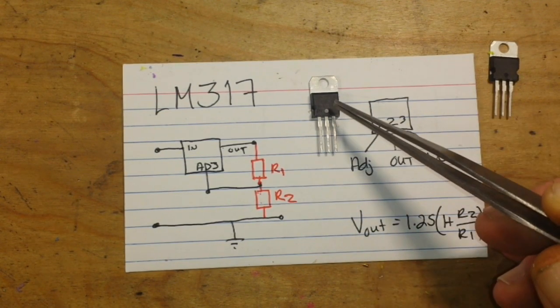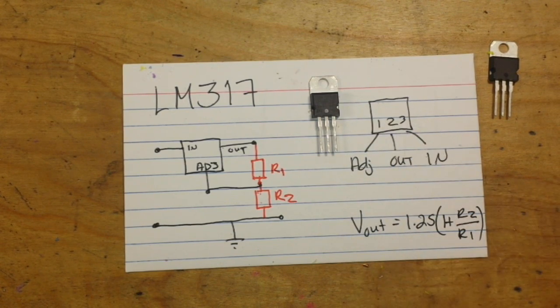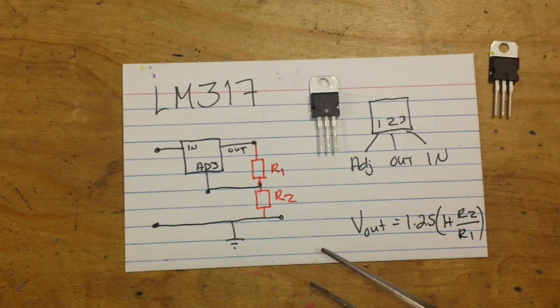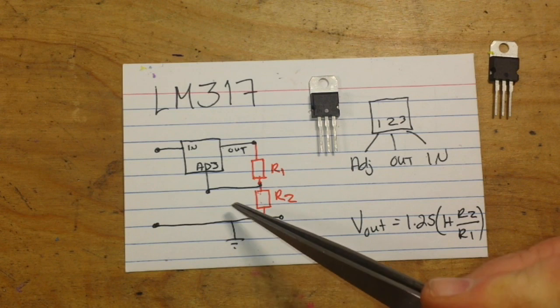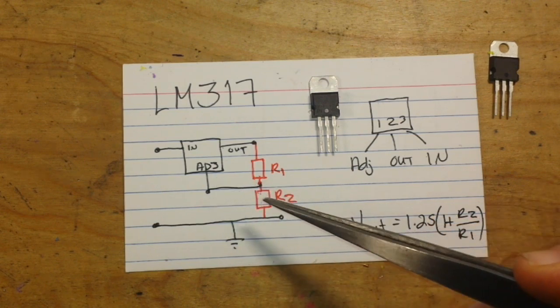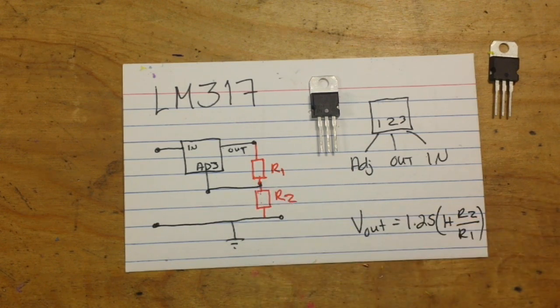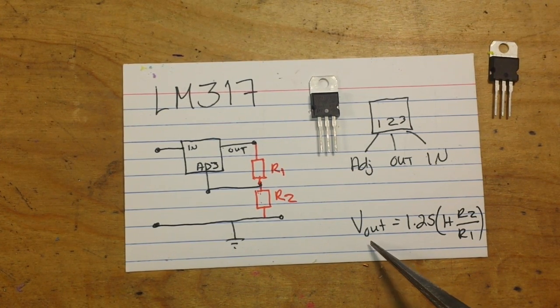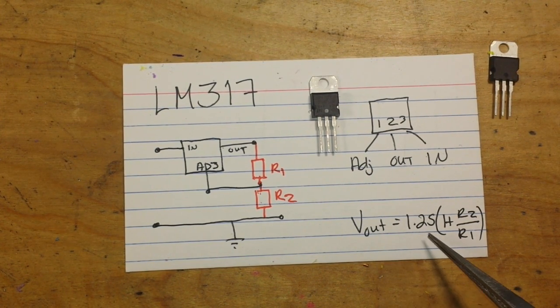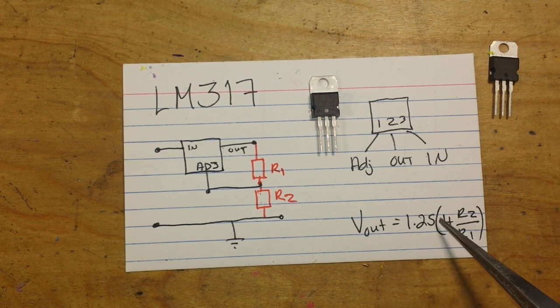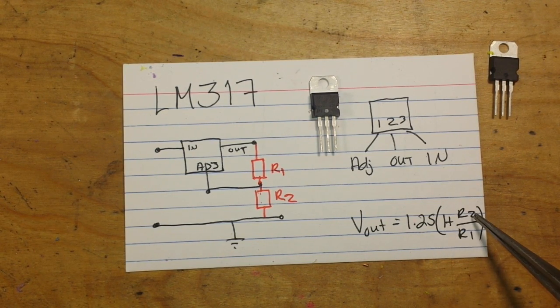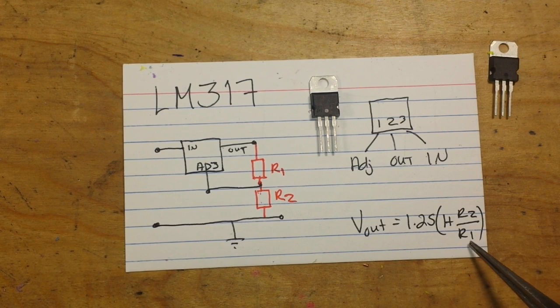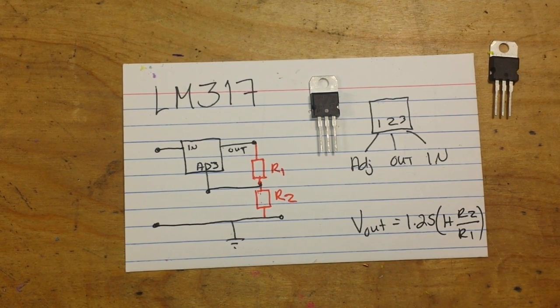And the way this thing works is it has a 1.25 volt voltage reference inside of it. And by creating this little voltage divider circuit right here, we can take advantage of that 1.25 volts and get whatever voltage out we want. The key to doing that is this formula you see right here. Voltage out equals 1.25 volts times 1 plus R2 over R1.